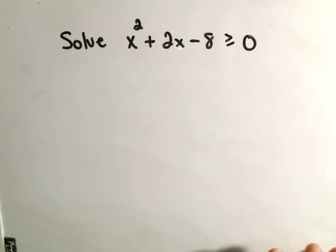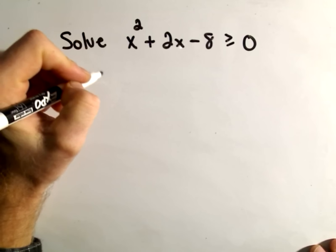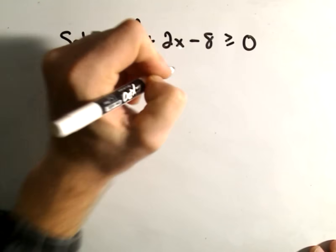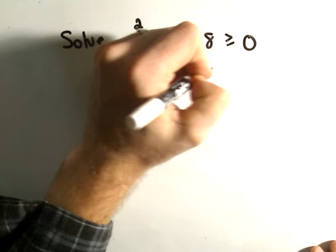So suppose we have x squared plus 2x minus 8. I'm going to factor this, well first we'll turn it into an equation. So x squared plus 2x minus 8, we'll just make it equal to 0.